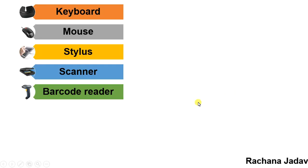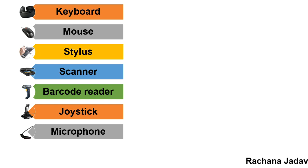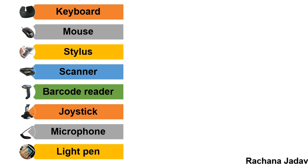Next is the joystick. Everyone knows the joystick is used mainly for playing games — it has many buttons with different functions. The microphone is used to record voice, sound, and more — it is used for YouTube videos and even radio broadcasting. The light pen is also a pointing device that works on the screen.